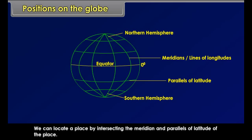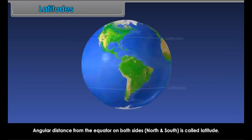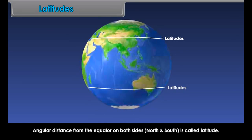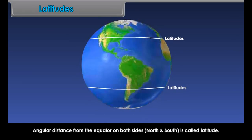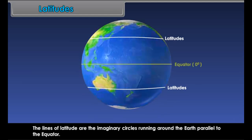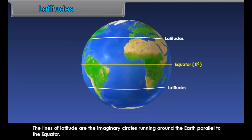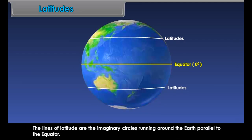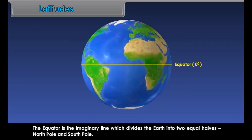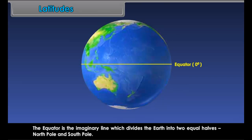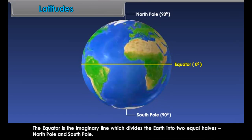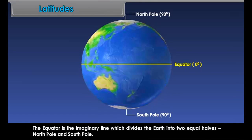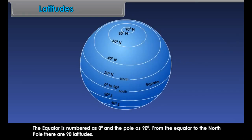All the lines running parallel to the equator are called parallels of latitude. We can locate a place by intersecting the meridian and parallels of latitude of the place. The lines of latitude are the imaginary circles running around the earth parallel to the equator. The equator is the imaginary line which divides the earth into two equal halves. The equator is numbered as zero degrees and the pole as 90 degrees.